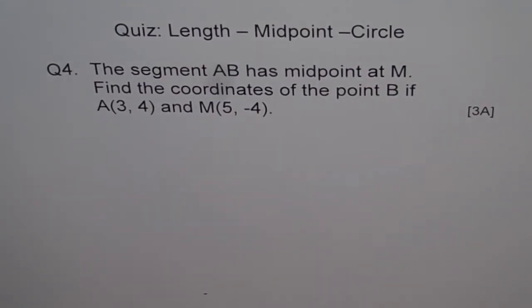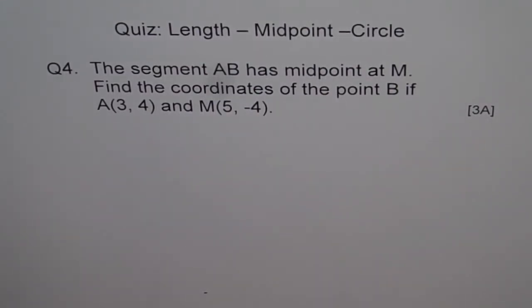Question 4. The segment AB has midpoint at M. Find the coordinates of the point B if A is (3, 4) and M is (5, -4).